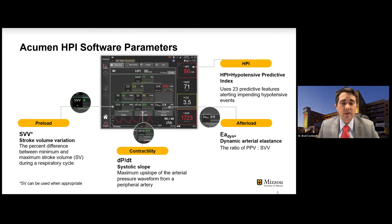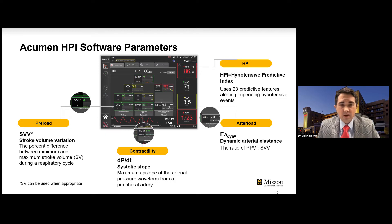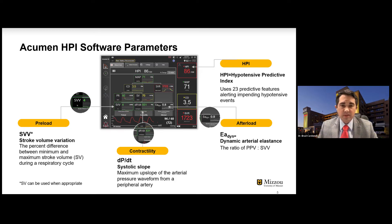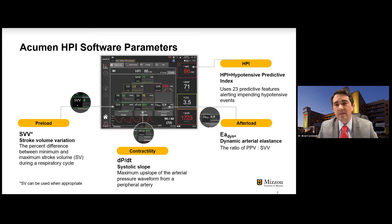If we zoom in on that secondary screen, we get things we're all familiar with: preload, contractility, and afterload. Preload uses stroke volume variation — the percent difference between maximum and minimum stroke volume during the respiratory cycle. Contractility uses dP/dt, derived from the arterial pressure waveform. I should mention that Acumen HPI is an arterial pressure device — it's a transducer that connects to the Hemisphere platform to provide all this information, making it minimally invasive. It can all be monitored with cerebral oximetry stickers placed on the forehead or somatically, along with an arterial line.